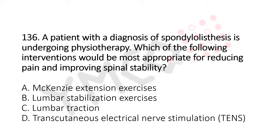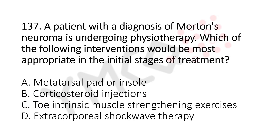Now let's move to question number 136. A patient with a diagnosis of spondylolisthesis is undergoing physiotherapy. Which of the following interventions would be the most appropriate for reducing pain and improving spinal stability? Option A: McKenzie extension exercises. Option B: lumbar stabilization exercises. Option C: lumbar traction. Option D: transcutaneous electrical nerve stimulation, that's TENS. The answer is option B: lumbar stabilization exercises.